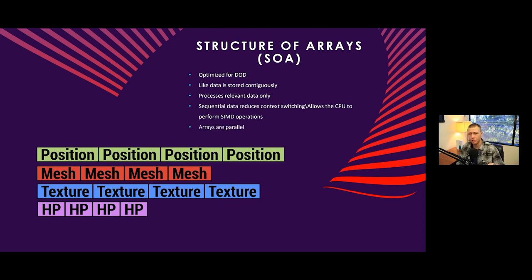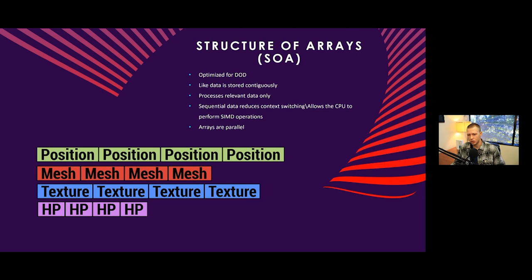One important thing to point out when using Structure of Arrays is that these arrays are parallel. This gives us a couple of benefits. First, arrays will always have the same number of elements — you can see we have four positions, four meshes, four textures, four health values. More importantly, the data at the same index of each array is implicitly associated with the same entity.